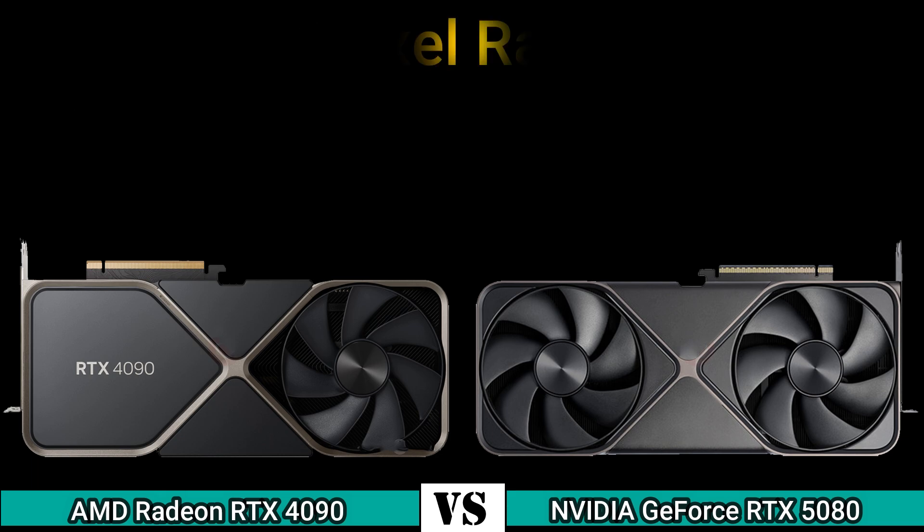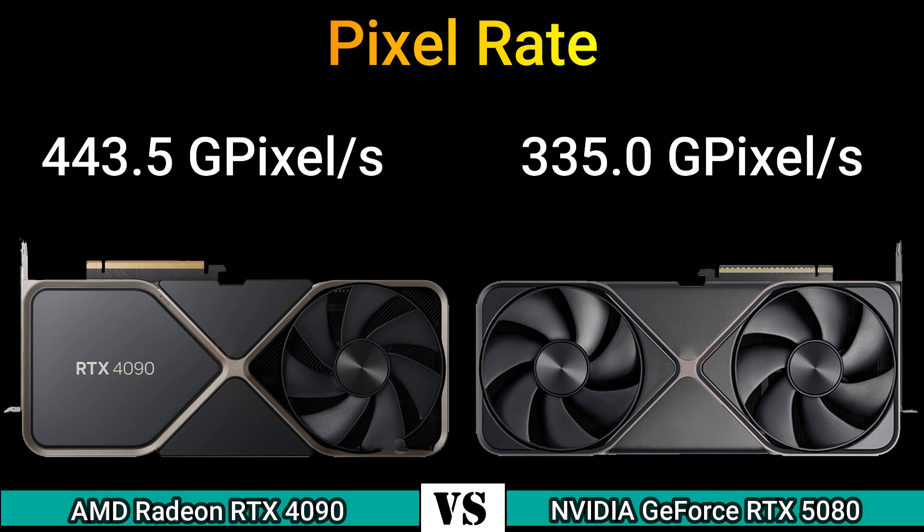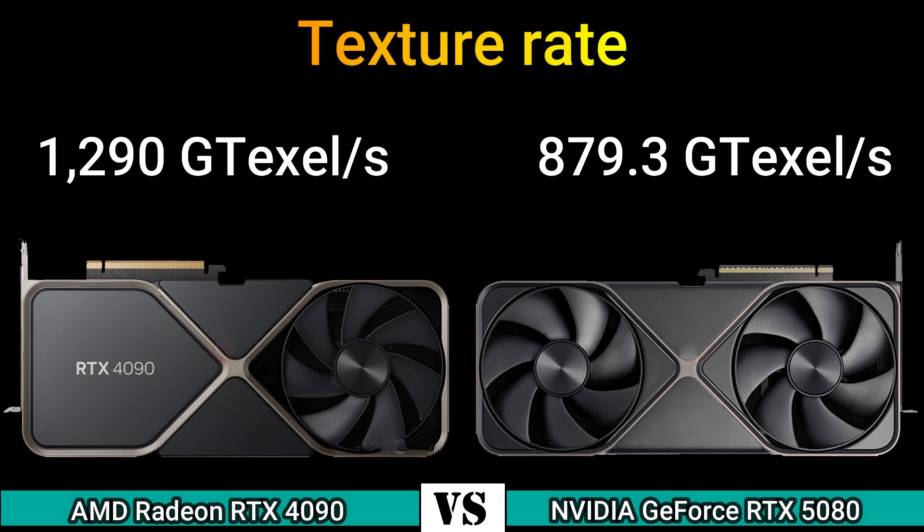Pixel rate 443.5 Gpixels/s and 335.0 Gpixels/s. Texture rate 1290 GT/s and 879.3 GT/s.